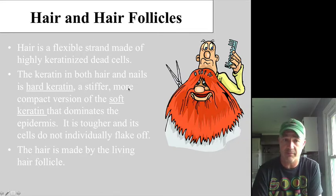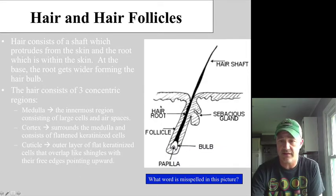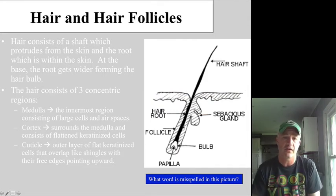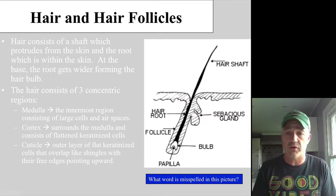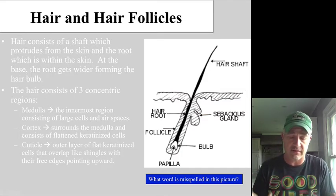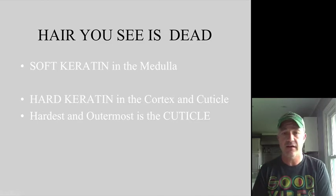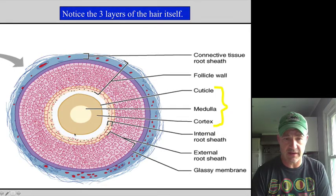While the hair itself is not living, the bottom of the hair follicles are. The hair follicle goes down into the skin and is lined with epithelial tissue. The living part of the hair is at the base of the follicle, where cells grow and divide, migrating up to make the hair longer. Hair consists of concentric rings — the medulla, cortex, and cuticle — with softer keratin on the inside and harder keratin on the outside.